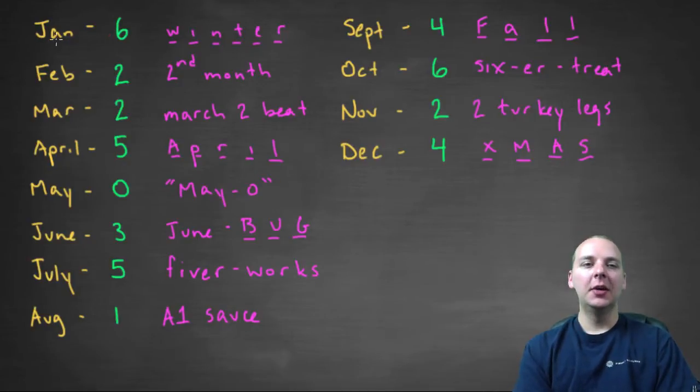January is 6 because when I think January, you can think winter. Winter has 6 letters, so that's why it's 6. February is the second month of the year, so it's a 2. March you can think of the phrase March to the beat, so March is 2. April is the number 5 because April has 5 letters.